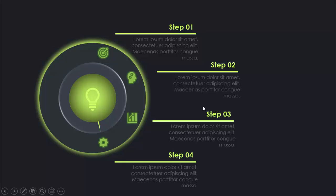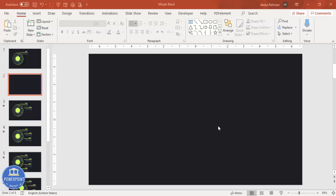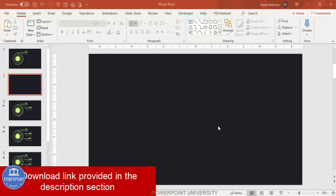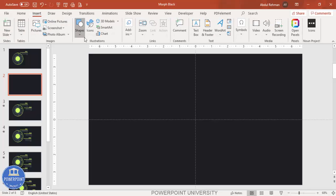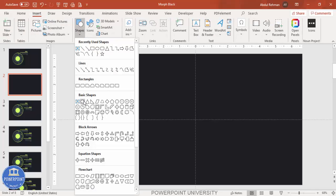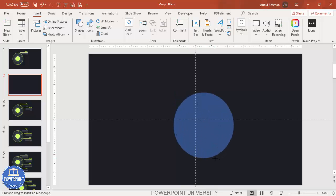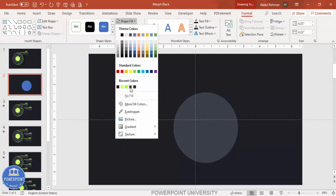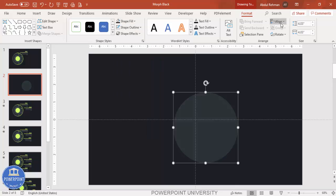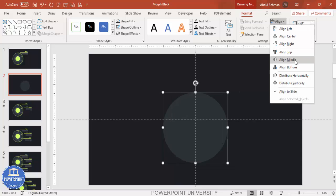So let's see how to create this MOF transition template in PowerPoint. Add a new slide and change the background to any dark color — in this case I've used blue-gray. Then go to View, enable the guides, then go to Insert Shapes. Select the oval shape and draw it by holding the Shift key. Then set shape outline to no outline, give it a dark color fill such as light blue-gray, then align it to center and middle.